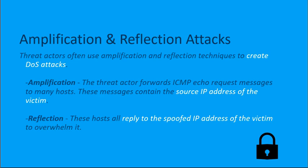With amplification, the threat actor is going to forward an ICMP echo request message to many hosts. These messages that we forward to these hosts all contain a spoofed source IP address, and that source IP address is of the victim we want to hit. So while we message all of these machines, all these messages have a spoofed source IP of the actual target we want to hit with our traffic.